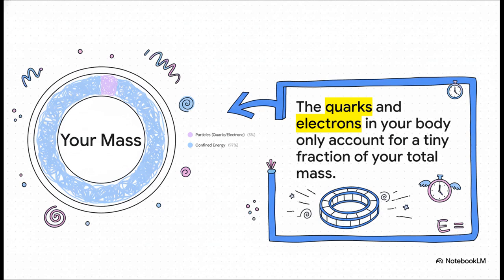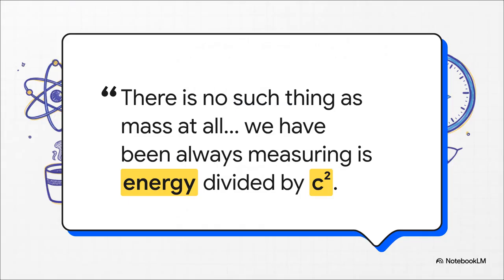It's pure energy. It's the kinetic energy of quarks bouncing around like crazy, and it's the potential energy that's binding them all together. Most of your mass isn't stuff at all. It's energy. And that leads to a mind-bending realization. E equals mc squared doesn't mean energy can be converted into mass. It means mass is a measurement of confined energy. They're the same thing, just in different units. There is no special substance called mass. So next time you step on a scale, you're not weighing how much stuff you're made of. You're weighing your locked up energy.